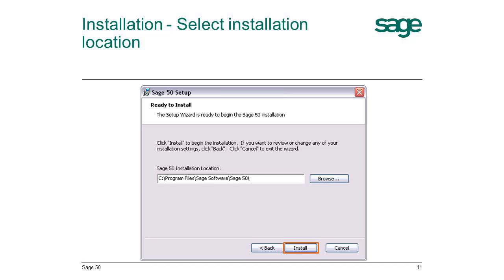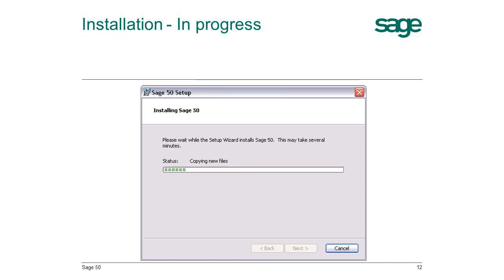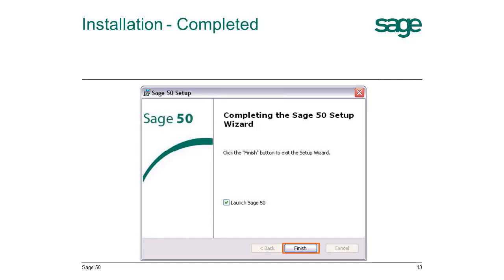You are now ready to install into the default folder. Click the Install button to proceed. The installation will progress as the system installs the necessary applications. Once the installation is completed, click the Finish button and Sage 50 will be automatically launched.